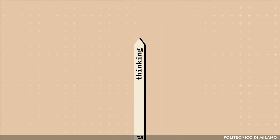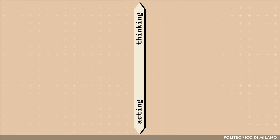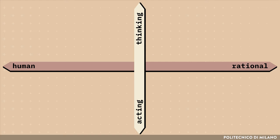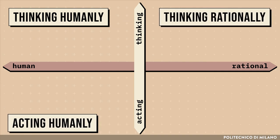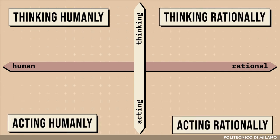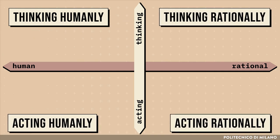In particular, we identify two dimensions. The first is thinking versus acting, and the second is human versus rational. So we have four cases: thinking humanly, thinking rationally, acting humanly, and acting rationally.